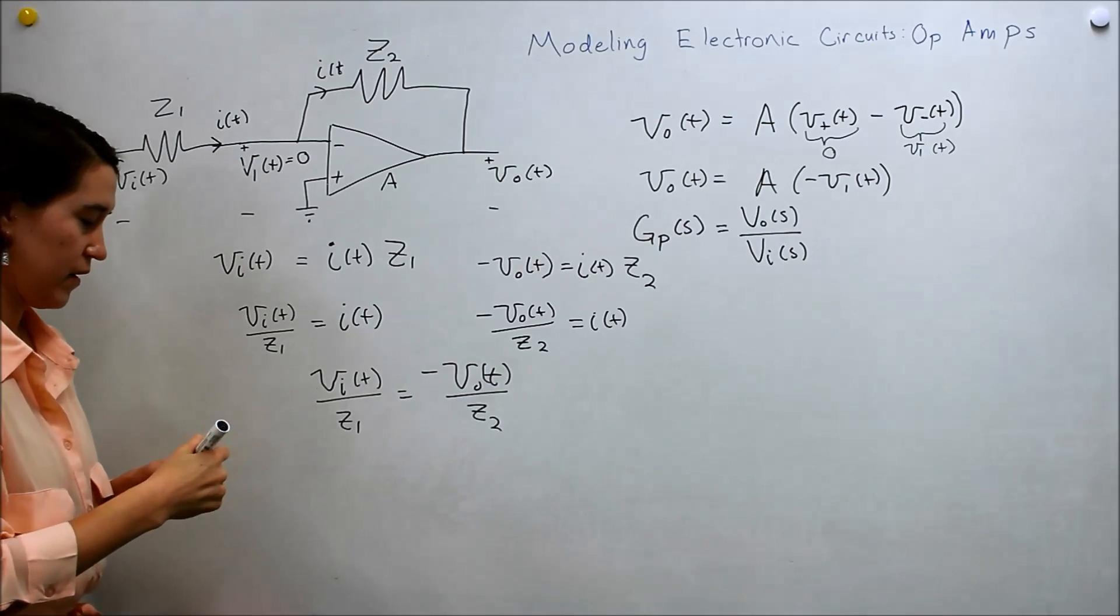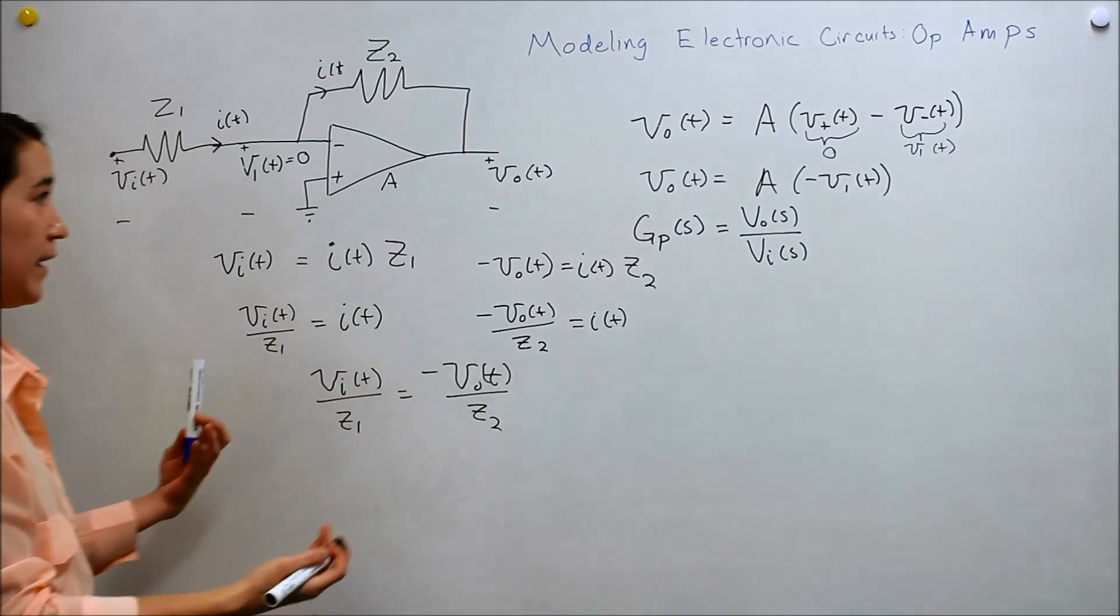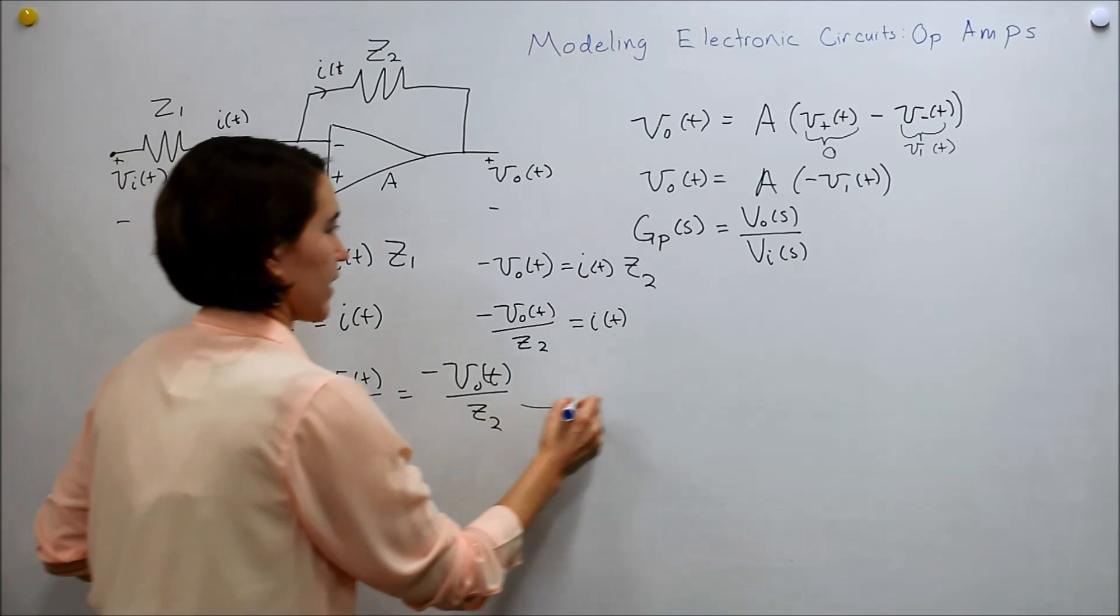We'll get V out of T over Z2. Alright, so we're almost there. We do want to end up in the frequency domain. So let's take the Laplace. And I'm going to draw it back over here. Let me take the Laplace here.